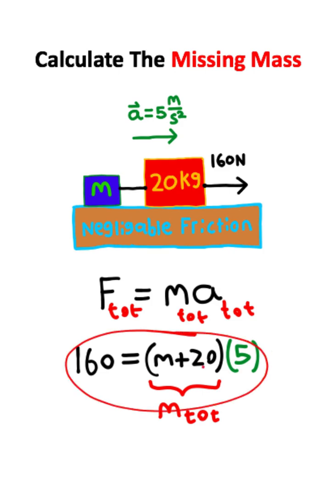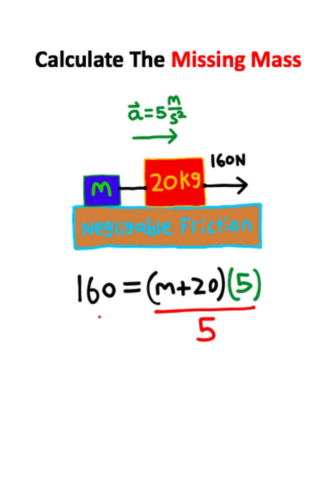So once you have all the numbers and variables plugged in, this basically just becomes an algebra problem. So what I'm first going to do is divide both sides of this equation by 5 to get the 5's to cancel on the right side.